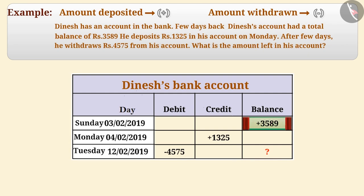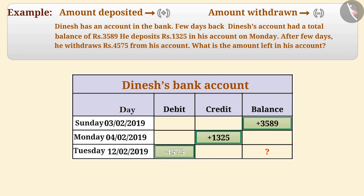Dinesh had Rs. 3,589 in his bank account, which is represented in the bank's ledger as plus 3,589. He deposited Rs. 1,325 on Monday, which will be represented in the ledger as plus 1,325. Few days later, he withdraws Rs. 4,575 from his bank account, which is represented in the ledger as minus 4,575.